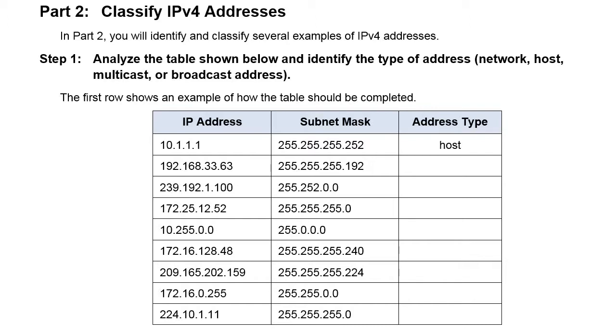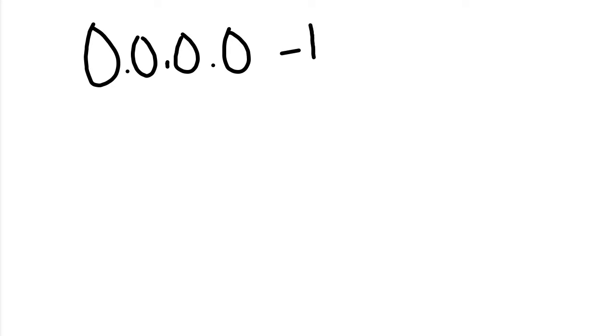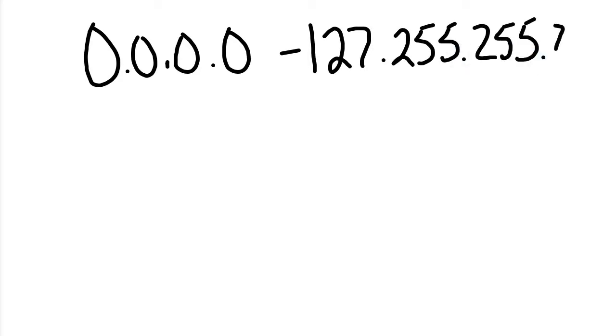Each class got its slice of the 4.3 billion addresses, but much like classes of wealth in humans, every class gets a different size slice of the whole pie. Class A slivered off half of the pie all for itself. In total there were 128 networks, occupying the range from 0.0.0.0 all the way through 127.255.255.255, representing about half of all IP version 4 addresses available.